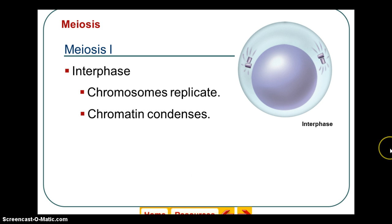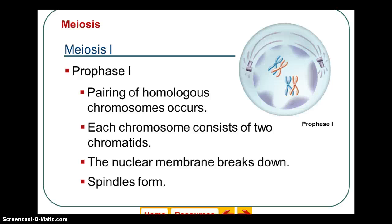In meiosis 1, we have interphase, just like in the standard cell cycle. During interphase, DNA replicates — chromosomes replicate because chromosomes are DNA.